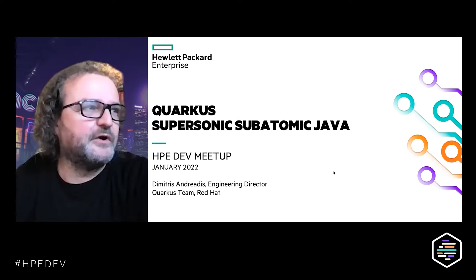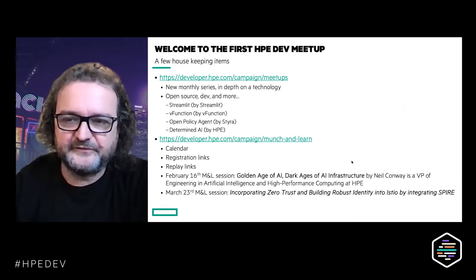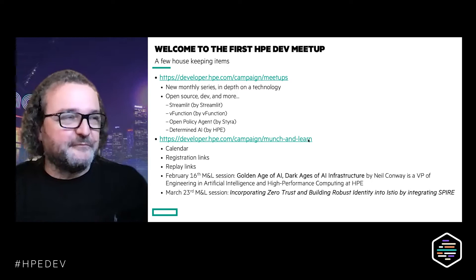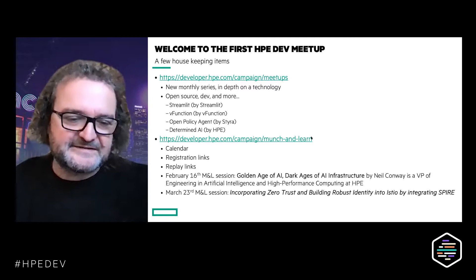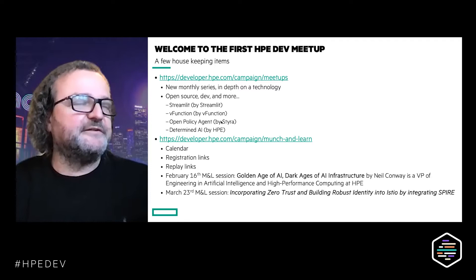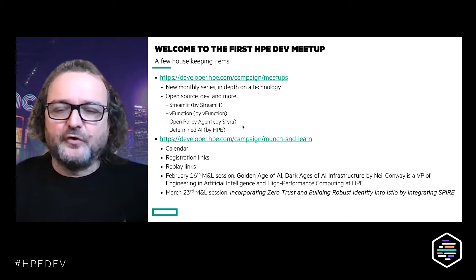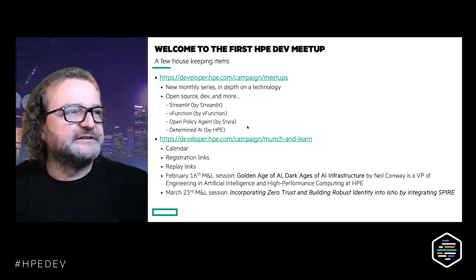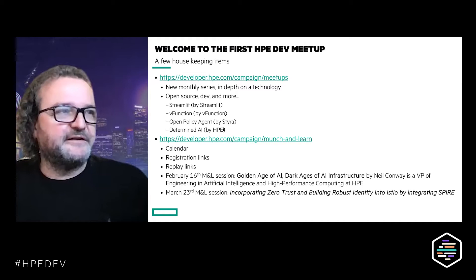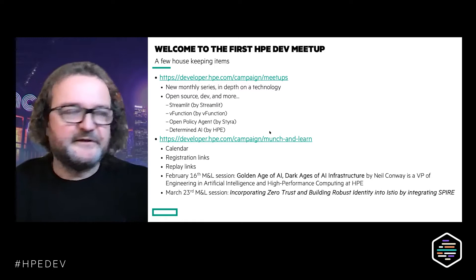So we kicked off this series of talks, which will be monthly, starting with Dimitris on Quarkus. We have more sessions coming up — next month from Streamlit, then V Function, then Open Policy Agent (OPA) from the CNCF, and one from Determined AI on the open source project Determined, run by an HPE employee.